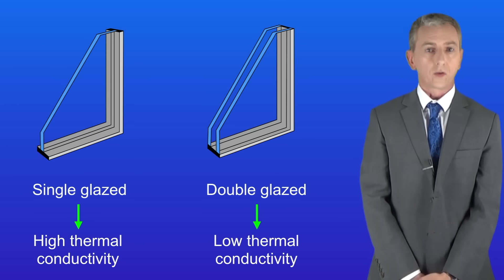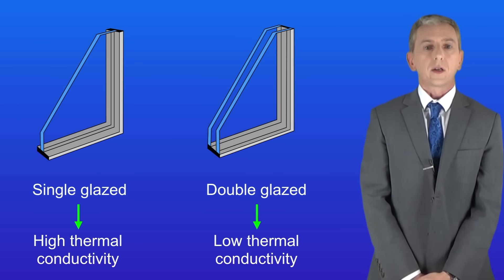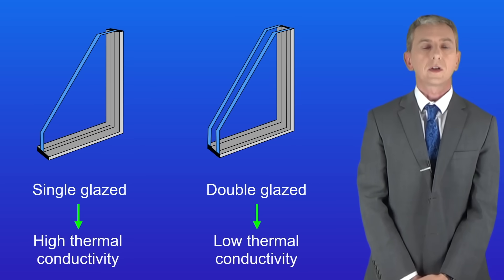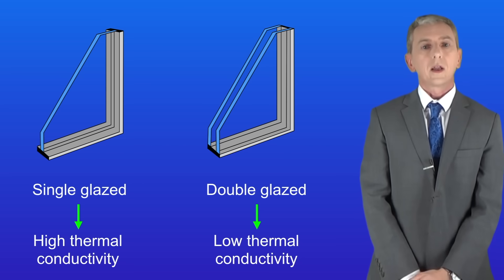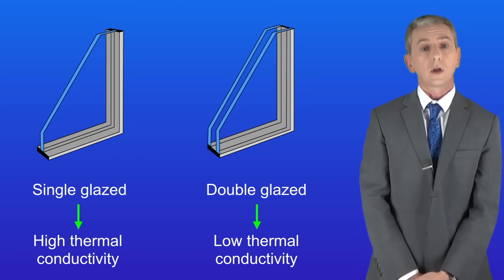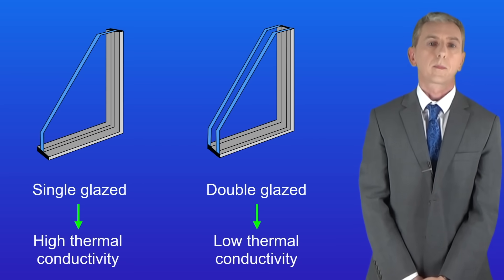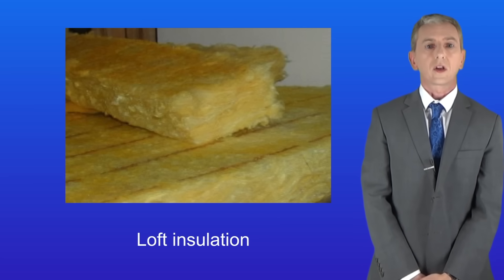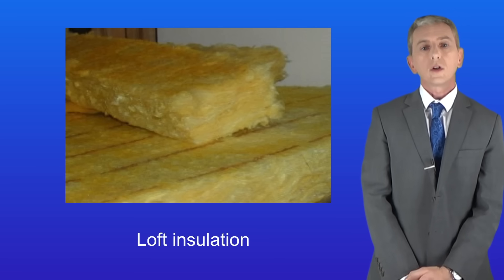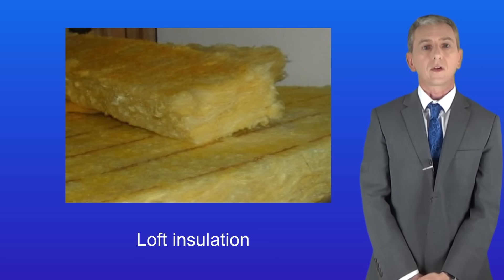As well as the walls, thermal energy can also escape through the windows. Single glazed windows have quite a high thermal conductivity, so most houses now have double glazed windows. These have a lower thermal conductivity so less thermal energy can pass through and leave the house interior. A lot of thermal energy can also escape through the roof of a house, so we can reduce this with loft insulation, which also has a low thermal conductivity reducing the rate at which thermal energy passes through.